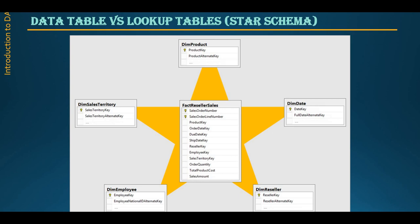In order to understand DAX more, we need to understand the star schema. Star schema consists of two types of tables: one is the data table, also called the fact table, and another one is the lookup table, also called the dimension table or dim table. For example, dim product is defined as a dimension table, also known as a lookup table.